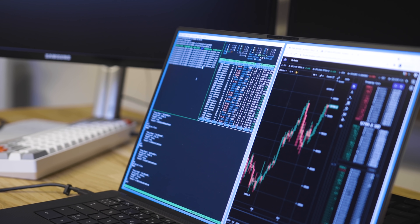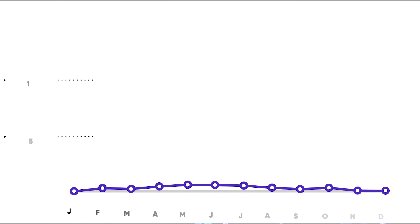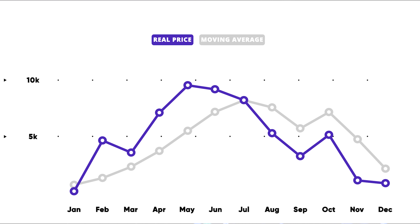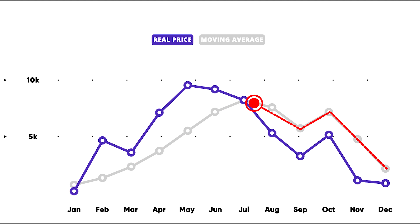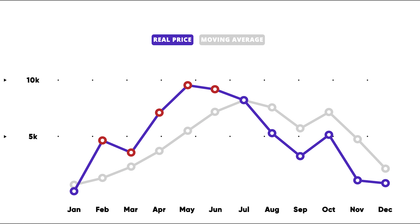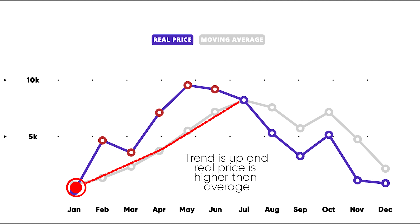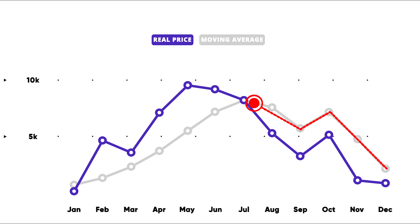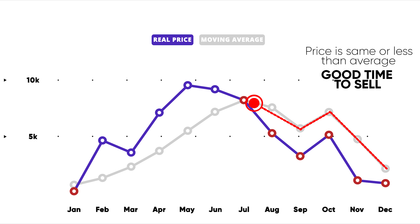My trading strategy is loosely based on trend following. The basic idea is that you calculate the average price of the crypto over some number of past prices, then see if that average is increasing or decreasing. If it's increasing, that's an uptrend — a good opportunity to buy. If it's decreasing, that's a downtrend — probably a good time to sell. Then you compare the current real-time price with your last average price: if it's higher and there's an uptrend, consider buying; if it's the same or lower, consider selling.